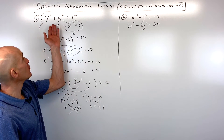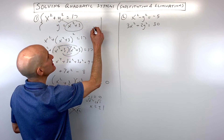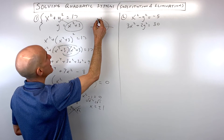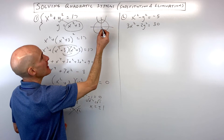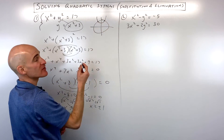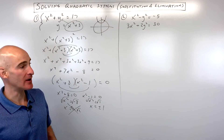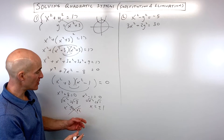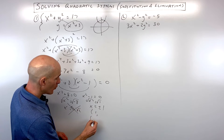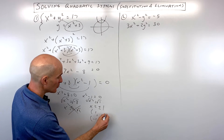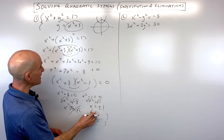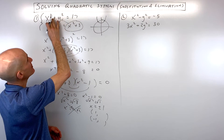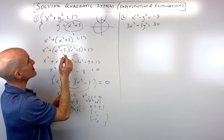When we look at x squared plus y squared equals 17, this is actually a circle, and y equals x squared plus 3 is actually a parabola. We're trying to find those points of intersection of these two graphs. The imaginary result gives us a false answer — not a point of intersection. But we do have x equals 1 and x equals negative 1. If we take 1 and put it back into the simpler equation, y equals x squared plus 3.